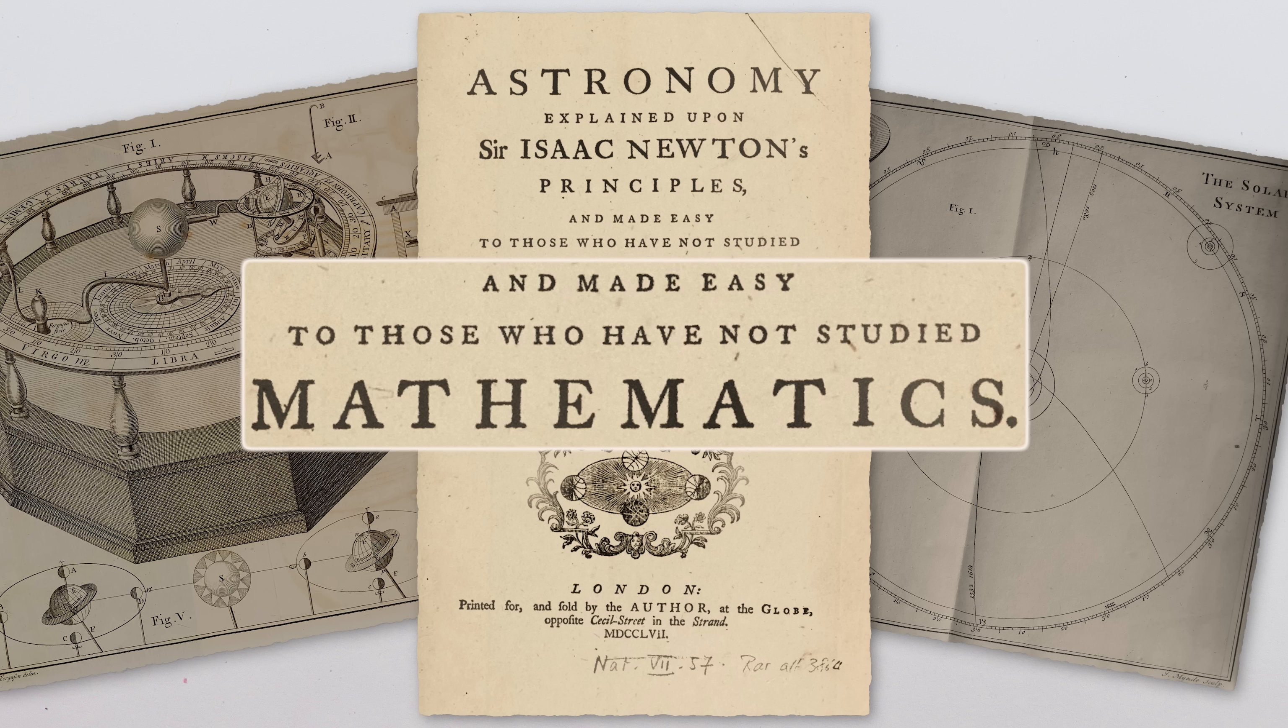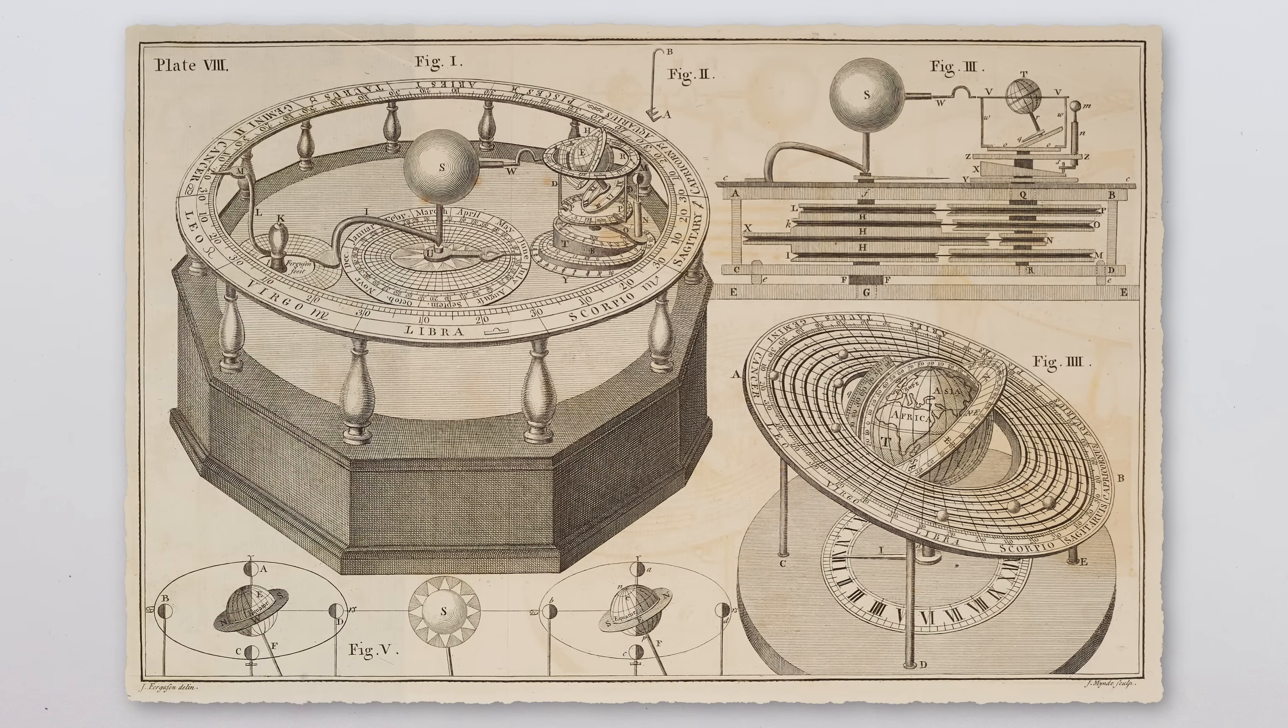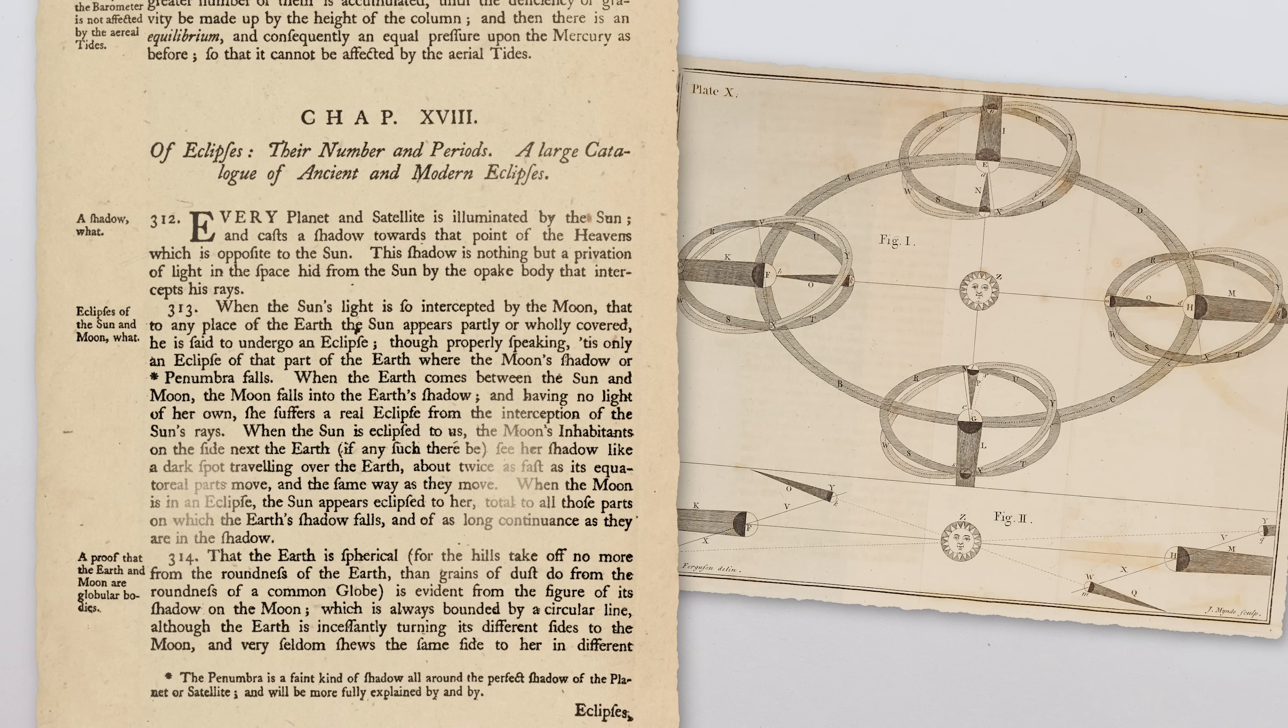It's kind of the 18th century equivalent of astronomy for dummies, complete with amazing illustrations. Here's Ferguson's surprisingly good 250-year-old explanation for why there aren't eclipses every month, illustrated by me.